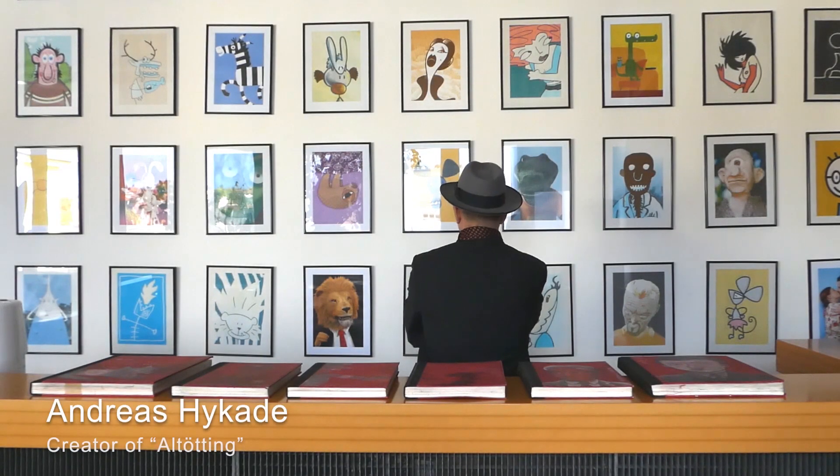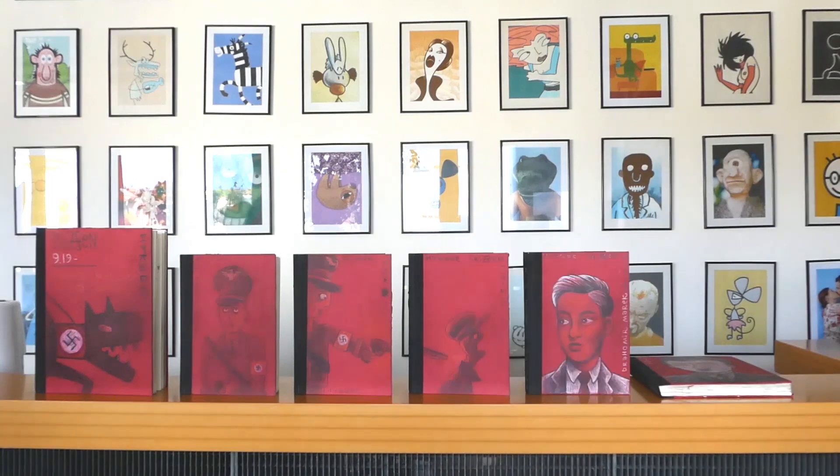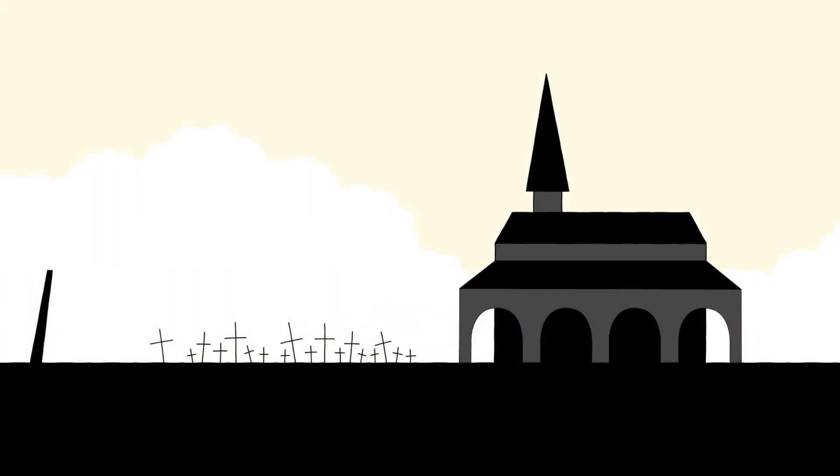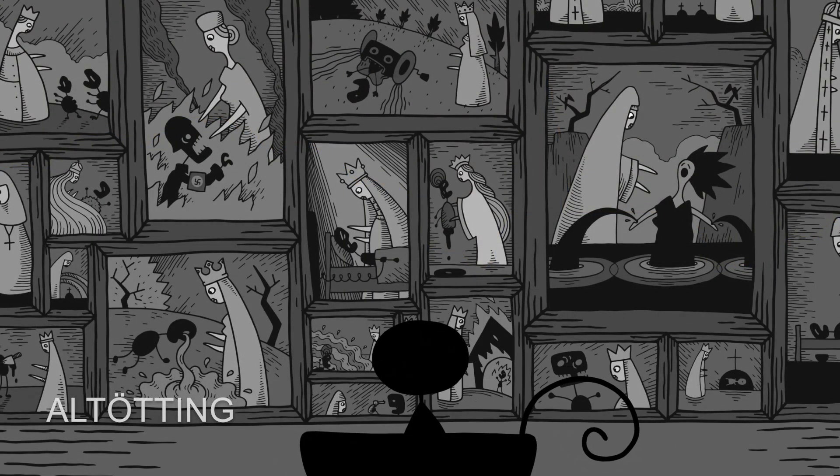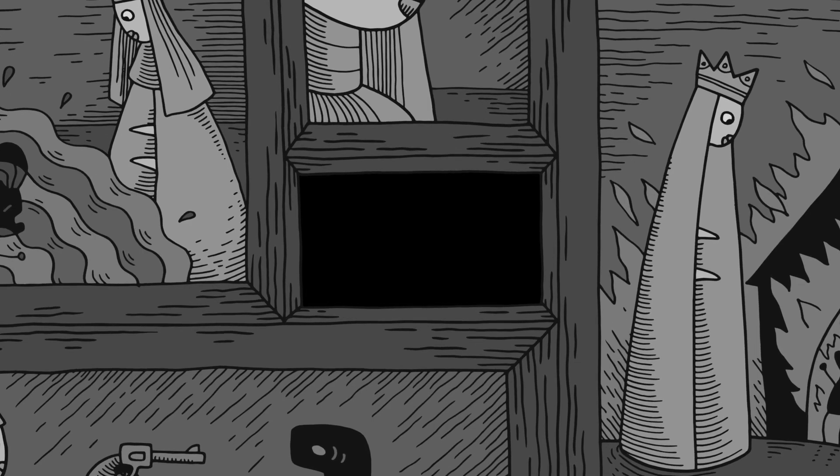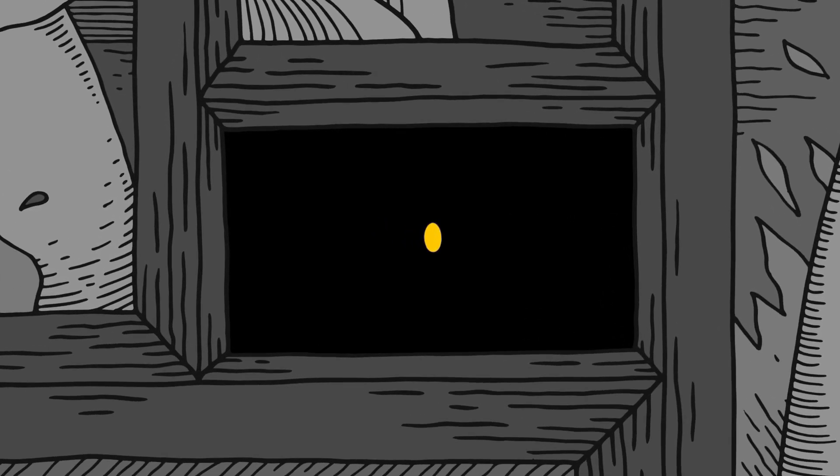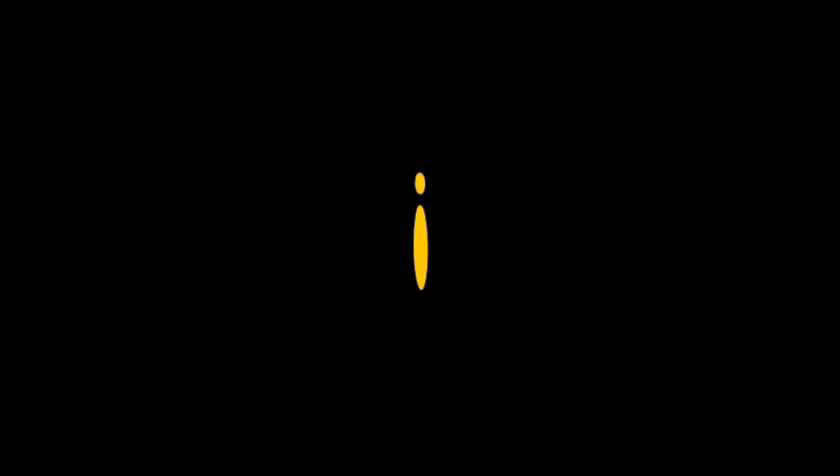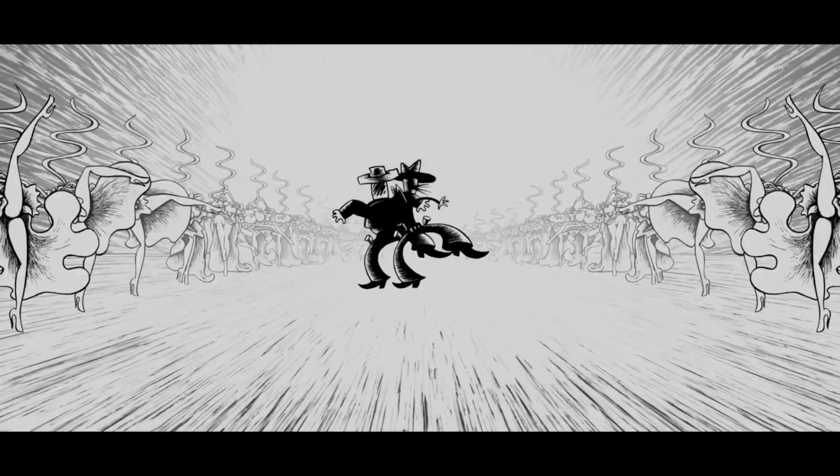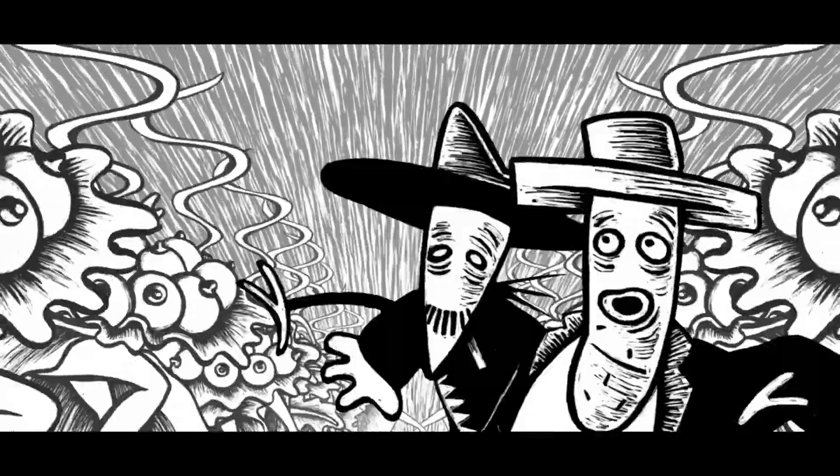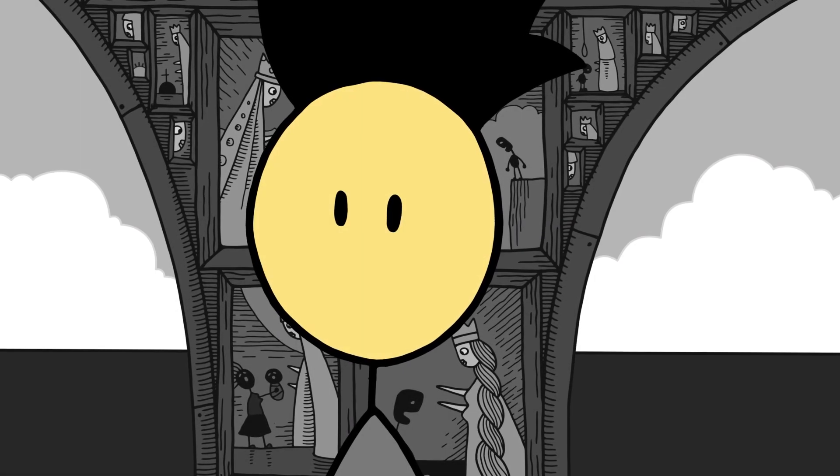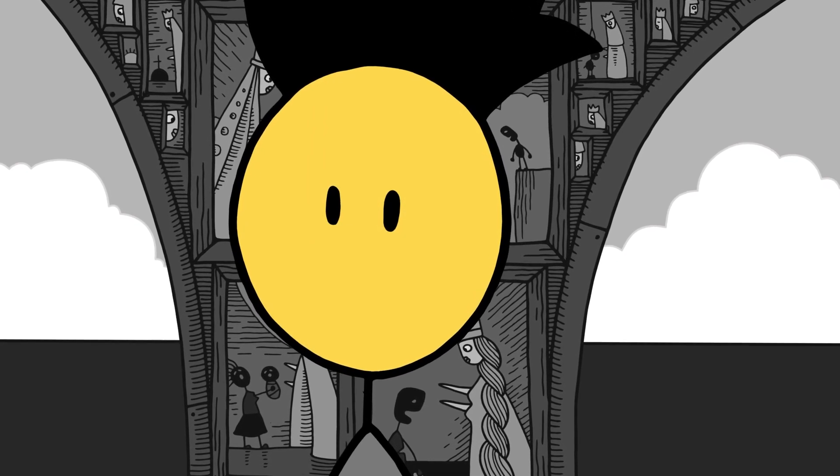And now, here's Andreas Hikade to present two films that he's been working on. So, the project I'm about to finish right now is a project called Altötting. Altötting is a place in Bavaria where I grew up. And there's a little chapel in the middle of that place where the Virgin Mary is performing miracles for 500 years now. And this film we're doing is about my fading love for the Virgin Mary. And it's a prequel to the film Ring of Fire that I've finished about 20 years ago.